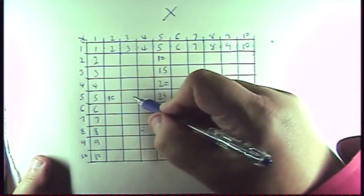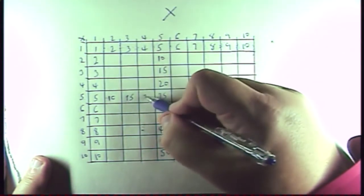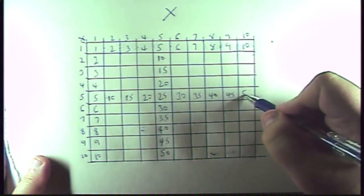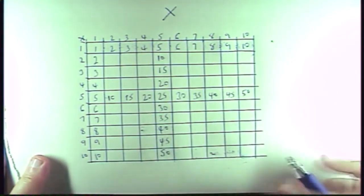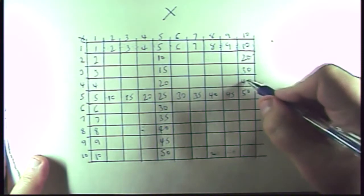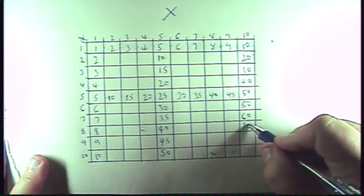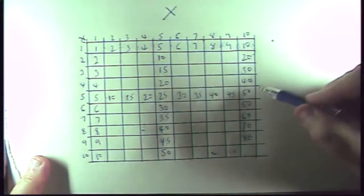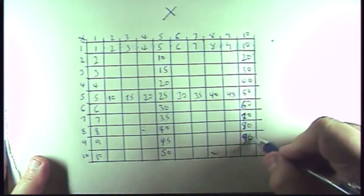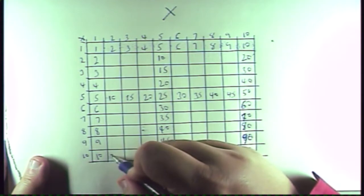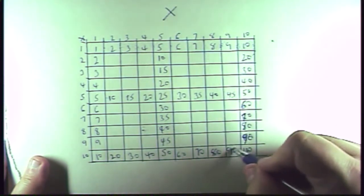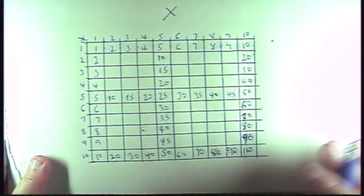So that gets us right in the middle. And then, since this is a ten, remember our rule about adding a zero: ten, twenty, thirty, forty, fifty, sixty, seventy, eighty, and a hundred. This one goes: ten, twenty, thirty, forty, fifty, sixty, seventy, eighty, ninety, and then a hundred. So I've got all these edges done.